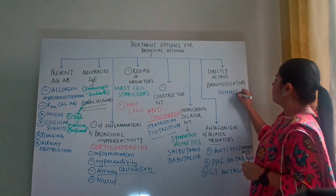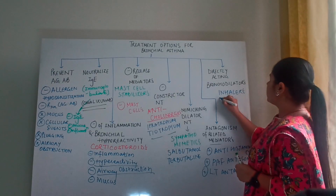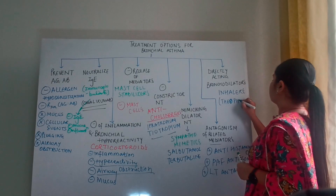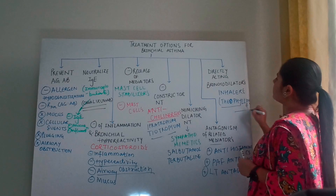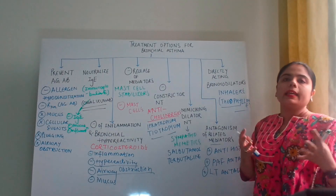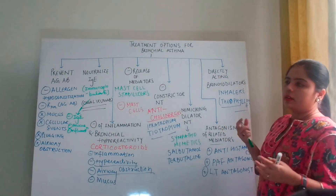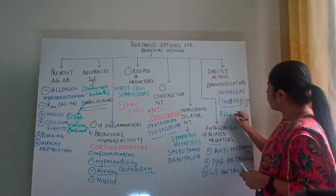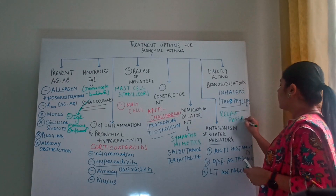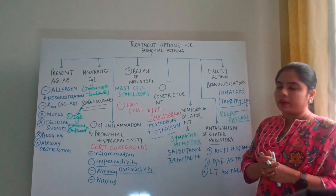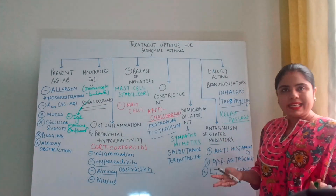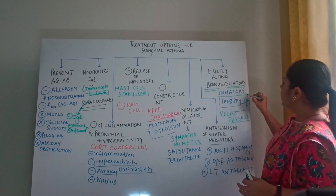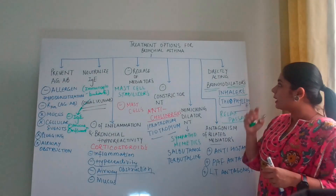Moving on to the last category: directly acting bronchodilators. These are basically used as inhalers. You must have heard of theophylline. These drugs are directly administered at the airway passage; they relax the muscles and dilate the passage. Airway obstruction is eased as we directly target the bronchial side. Bronchodilators are mostly given as inhalers and aerosol suspensions.